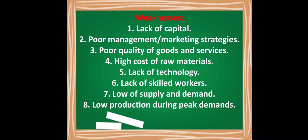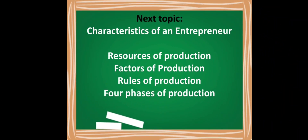This ends our first discussion in entrepreneurship. I hope that you learned something new and that you retain all the information you gained from this video. Our next topic to be discussed is all about the characteristics of an entrepreneur, the resources of production, factors of production, rules of production, and four phases of production. Kindly subscribe to my channel and click the notification bell to be updated on new videos. Thank you everyone and God bless. Goodbye for now.